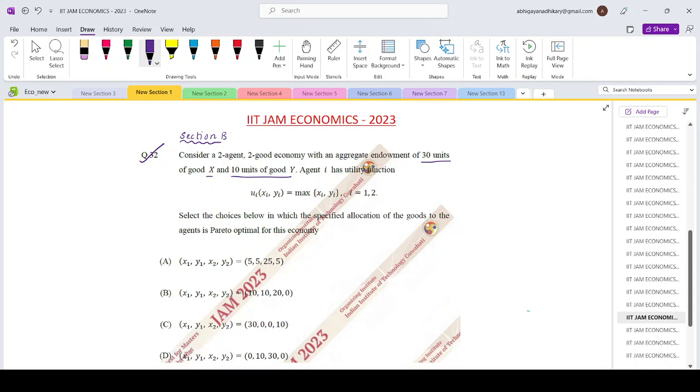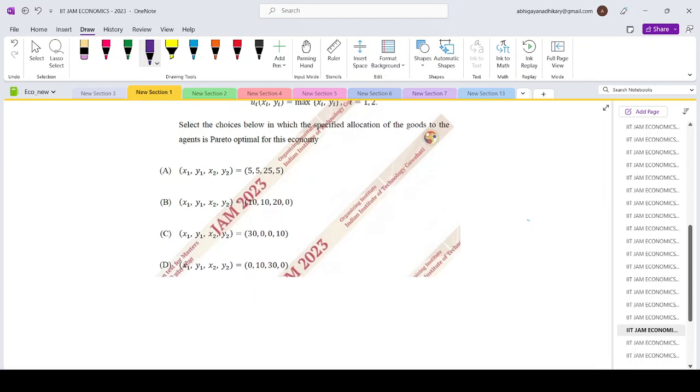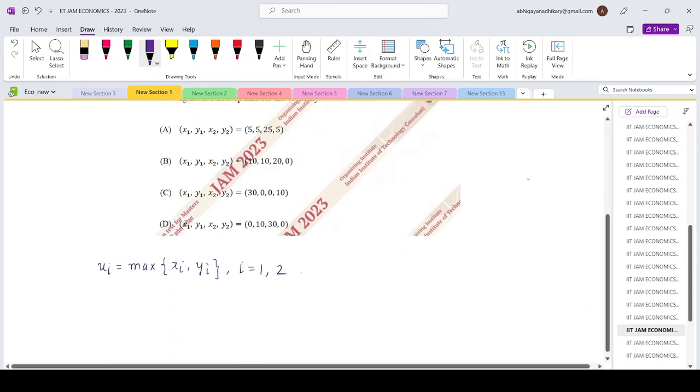Agent I's utility function is max of Xi comma Yi. We need to select the choices below in which the specified allocation of goods to the agents is Pareto optimal for the economy. So we have an identical utility function Ui equals max of Xi comma Yi where i equals 1 to 2. The total endowment of good X is 30 and the total endowment of good Y is equals to 10.